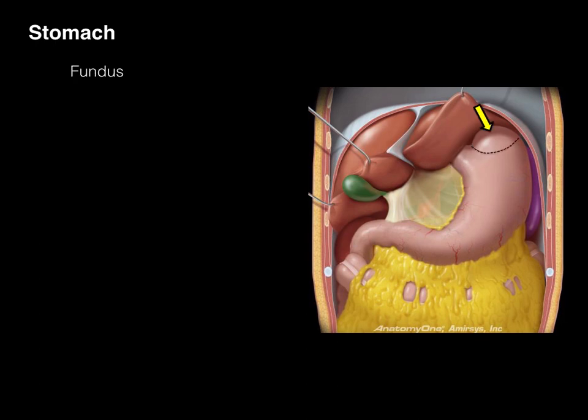We also have the fundus, and the fundus is any dome-shaped top of an organ. There are other organs that have a fundal portion. The fundus is the region where gas can accumulate because gas rises up — it's the highest part and where belches kind of come from.